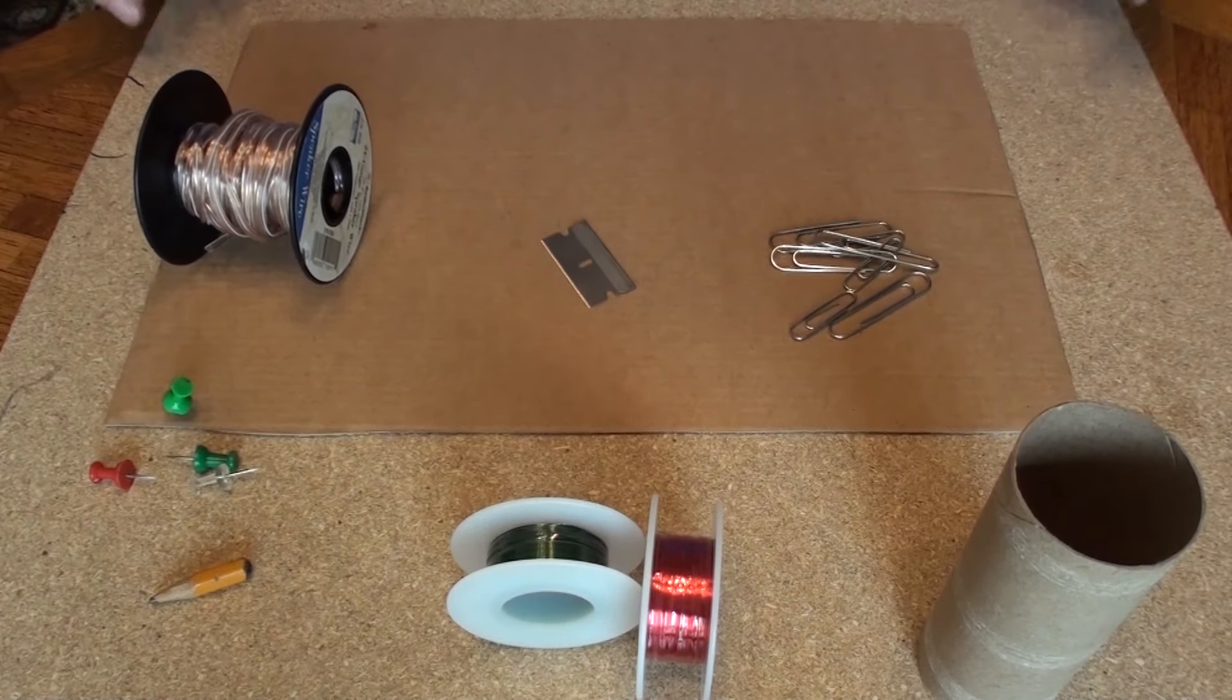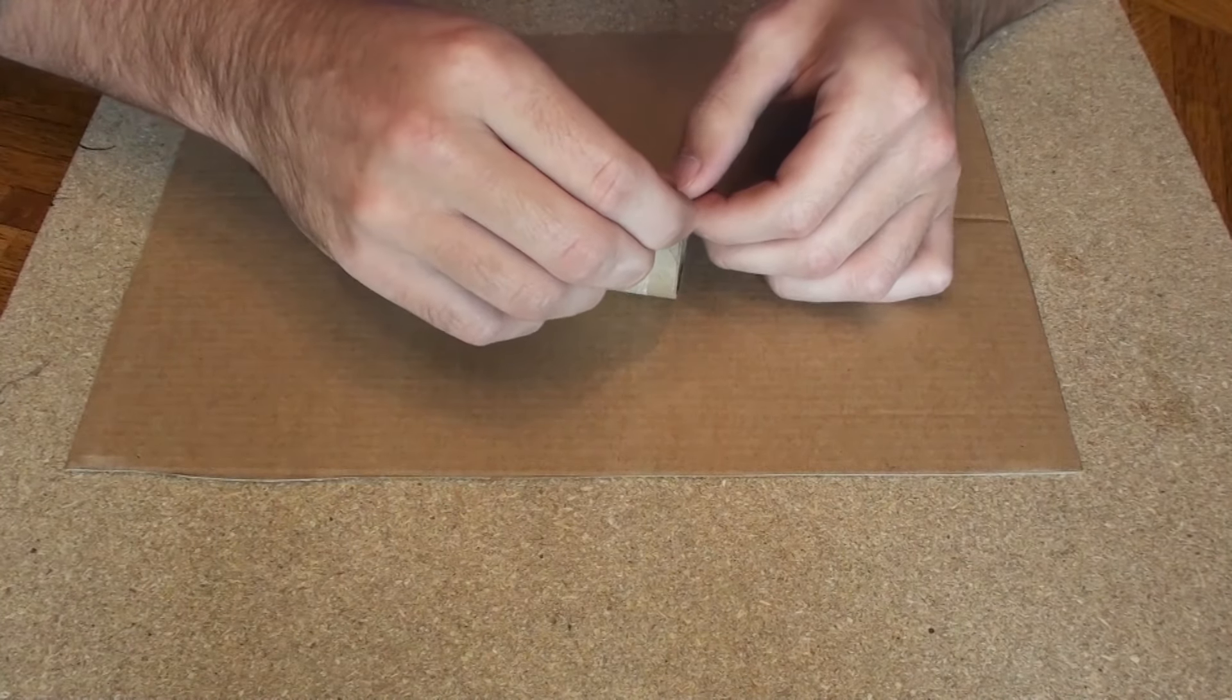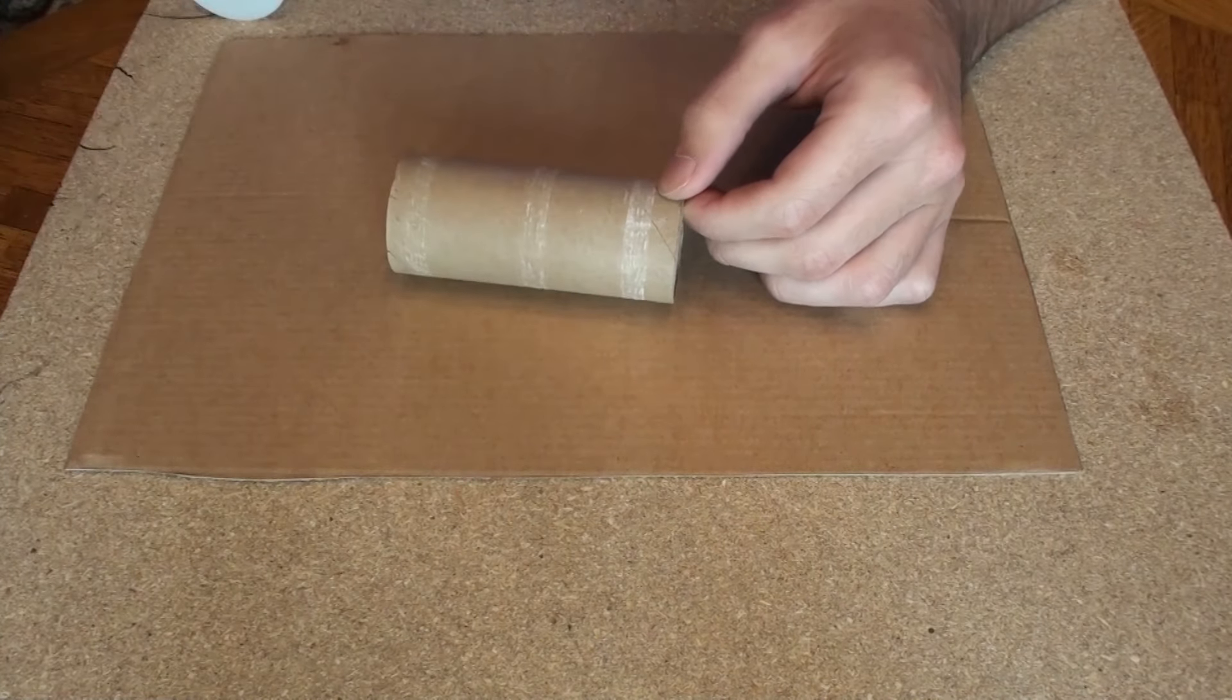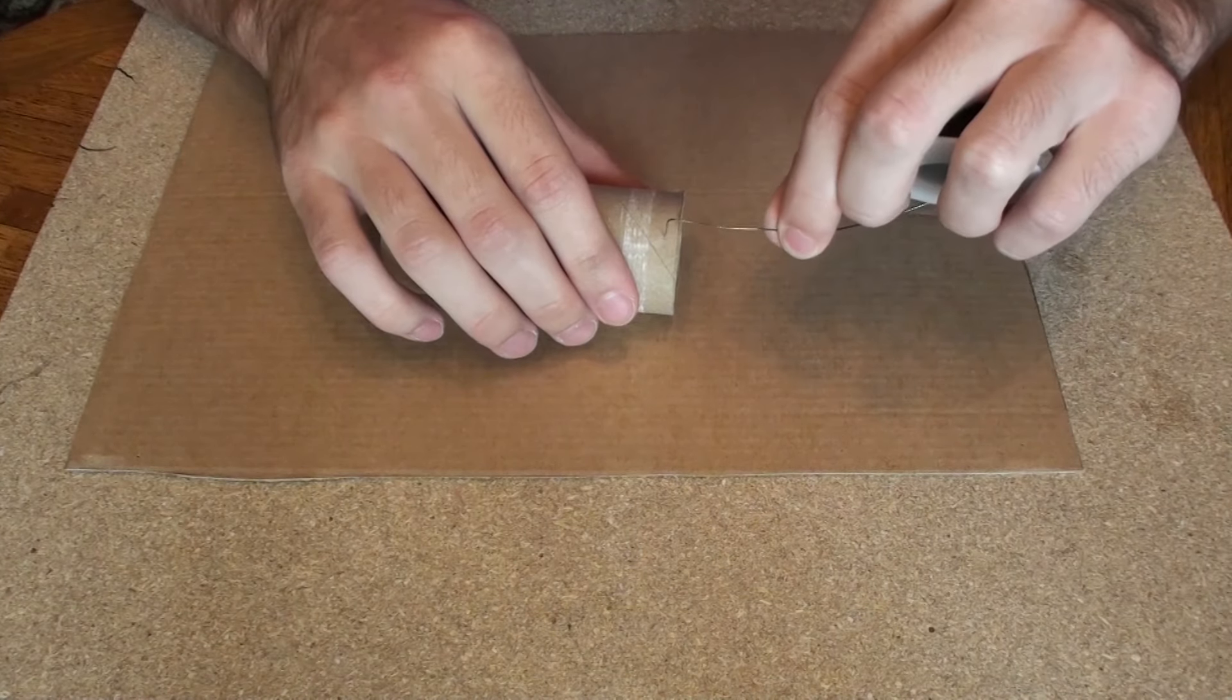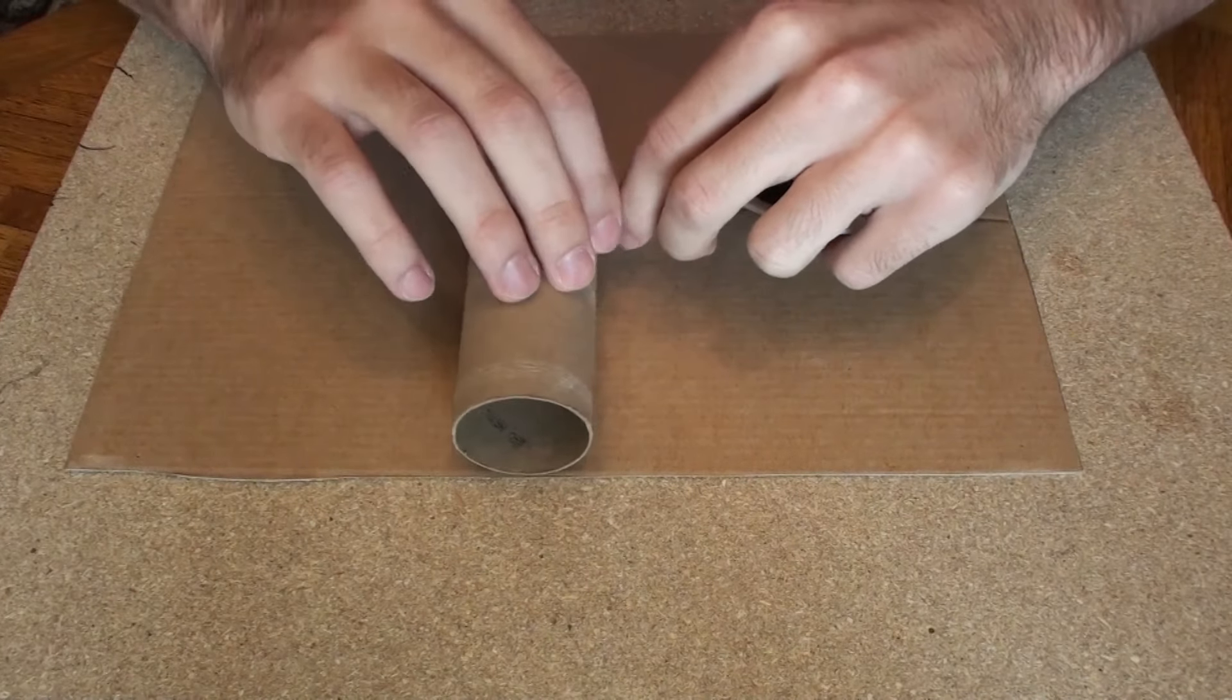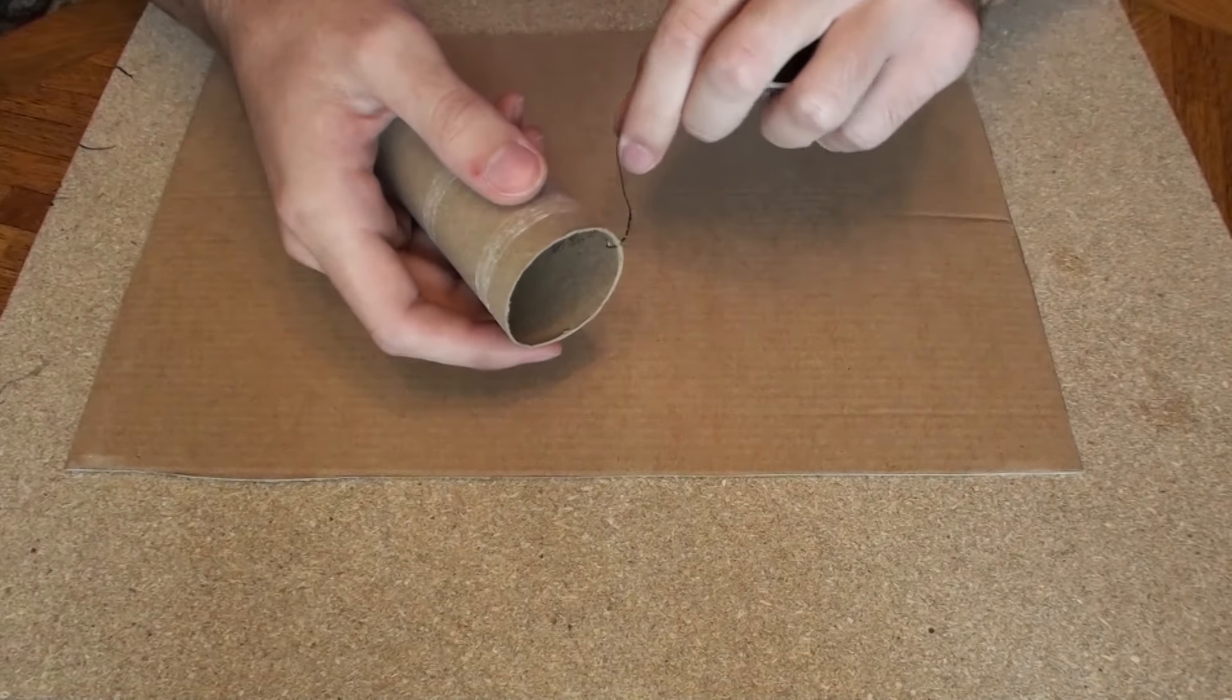So what we'll want to do is start by poking a small hole in one end of the toilet paper tube so we can start wrapping our magnet wire around. We just take our magnet wire, put it through a little hole, tie it off, and we start wrapping it.